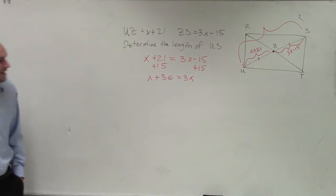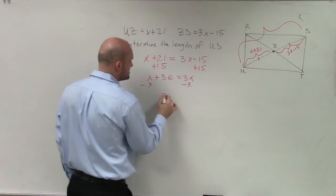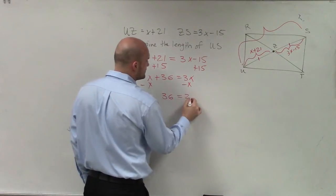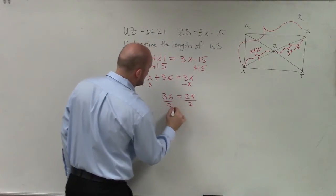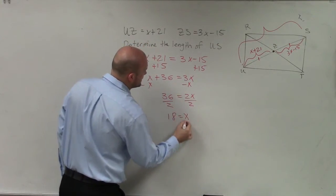So I add 15 on both sides, subtract x on both sides, 36 equals 2x, divide by 2, divide by 2, 18 equals x.